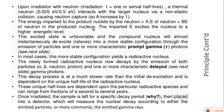The atomic mass increases by one unit. The energy imparted to the product nucleus by the neutron equals the kinetic energy of the neutron plus the binding energy of the neutron in the produced nucleus — both energies are efficiently transferred into the nucleus. This imparted energy excites the nucleus to a higher energy level. This excited state is unfavorable, and the compound nucleus almost instantaneously de-excites into a more stable configuration through emission of particles and one or more characteristic gamma radiation photons. In most cases, this more stable configuration yields a radioactive nucleus.